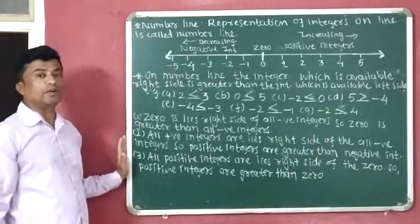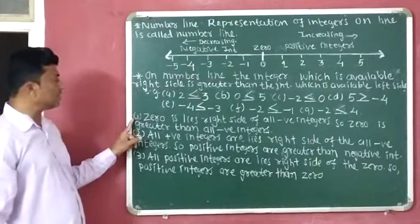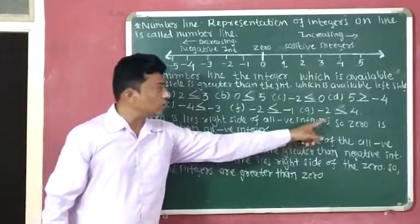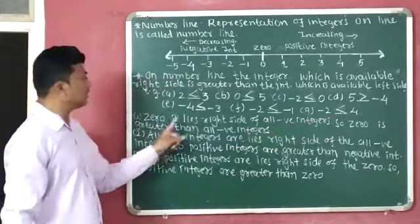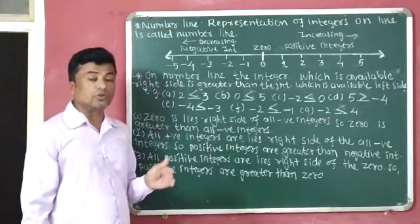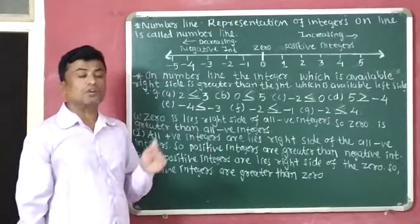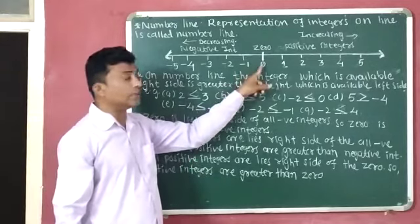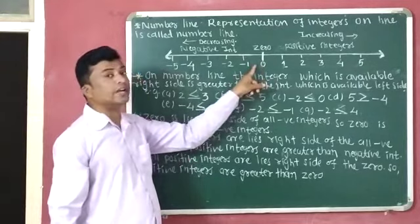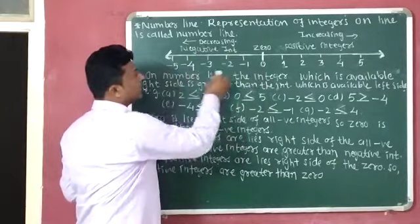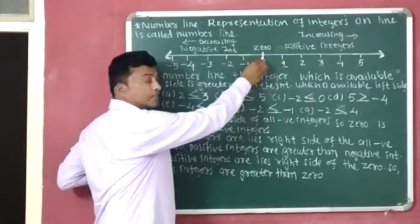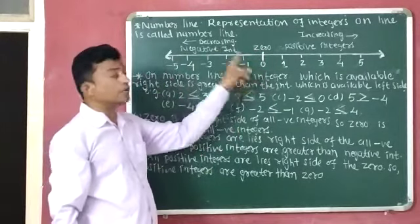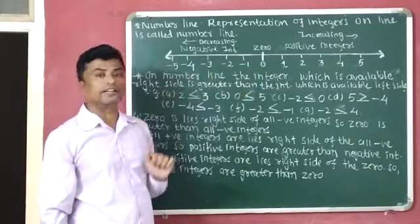Now we can discuss three points related to the number line. Point number one: zero is on the right side of all the negative integers, so zero is greater than all the negative integers. Zero is available on the right side of all the negative integers, so zero is greater than all of them.